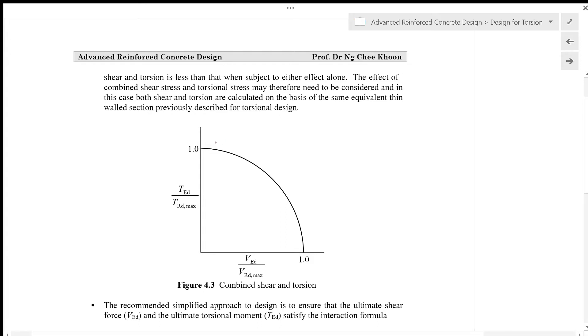In this interaction diagram, the applied shear force TED divided by the torsional resistance TRD max has a maximum value of 1. When shear acts alone, VED divided by VRD max, which is the maximum shear resistance based on the concrete compressive strut, also has a maximum value of 1.